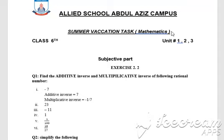First of all, we will find the additive inverse of question number 1, part number 1, which is minus 7. Its additive inverse will be the inverse operation of subtraction, which is addition. You commonly don't use the plus sign with any number, so 7 will be the additive inverse of minus 7. Similarly, the multiplicative inverse of minus 7 will be minus 1 divided by 7.